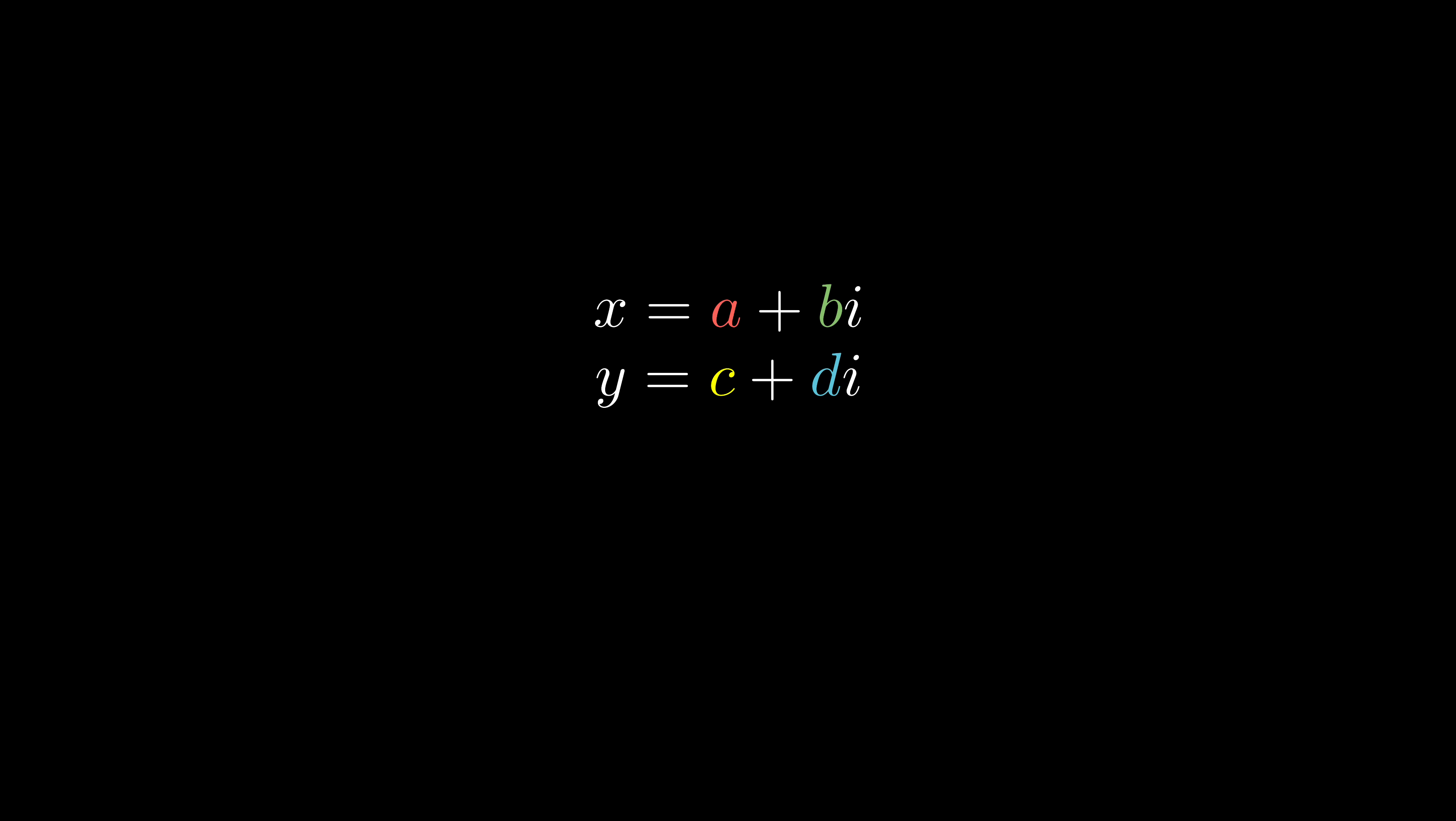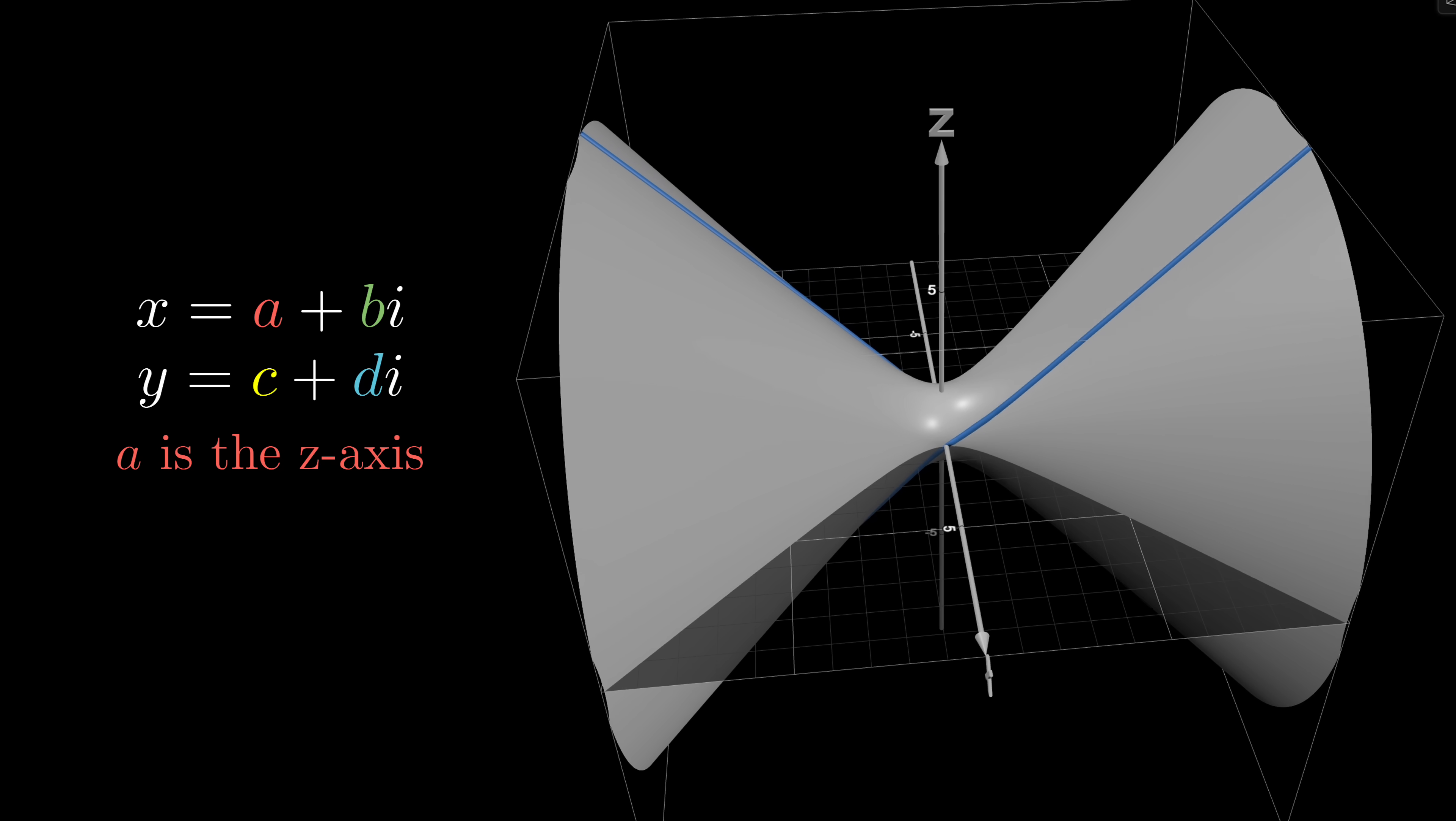Remember, b is the imaginary part of x. So the 3D structure we are going to see is a slicing of the 4D structure using the knife. b is a constant.